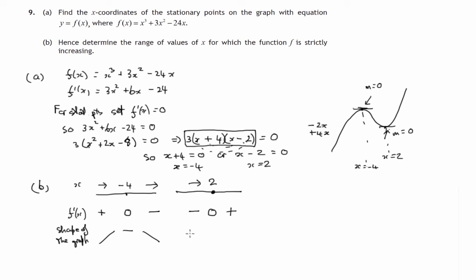So the shape of the graph around the value x = 2 we know is like this. The gradient is going downhill. It's a decreasing function at that point. Then it's stationary. And then it's increasing.